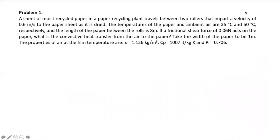Problem session number one: a sheet of moist recycled paper travels between two rollers at 0.6 m/s as it dries. The paper and ambient air temperatures are 25°C and 50°C respectively, the length between rolls is 8 m, and a frictional shear force of 0.06 N acts on the paper. The width is 1 m. Air properties at film temperature — density, C_p, and Prandtl — are provided.